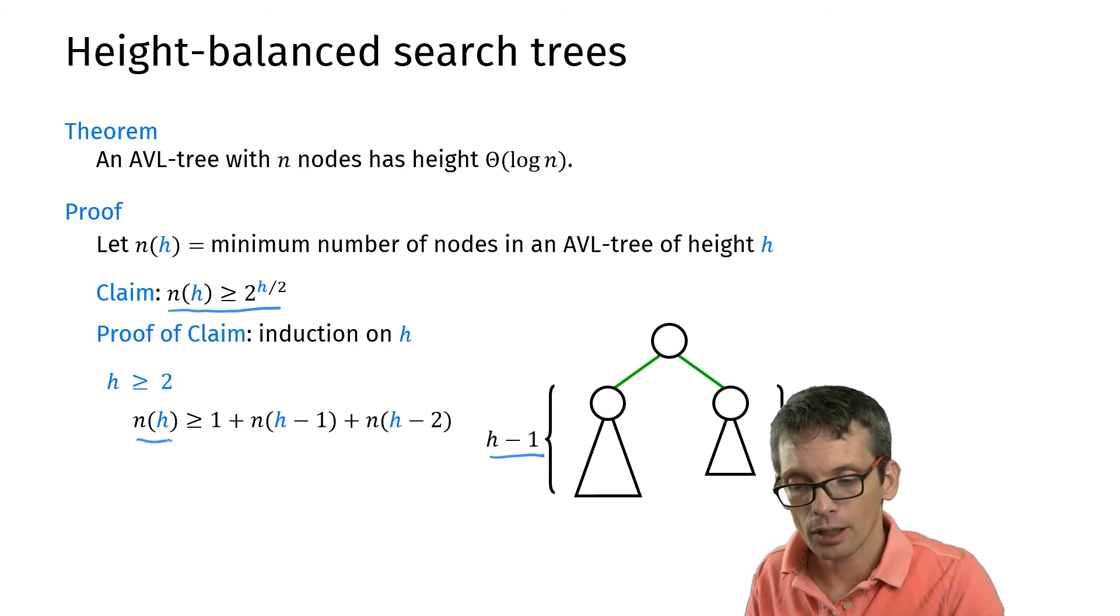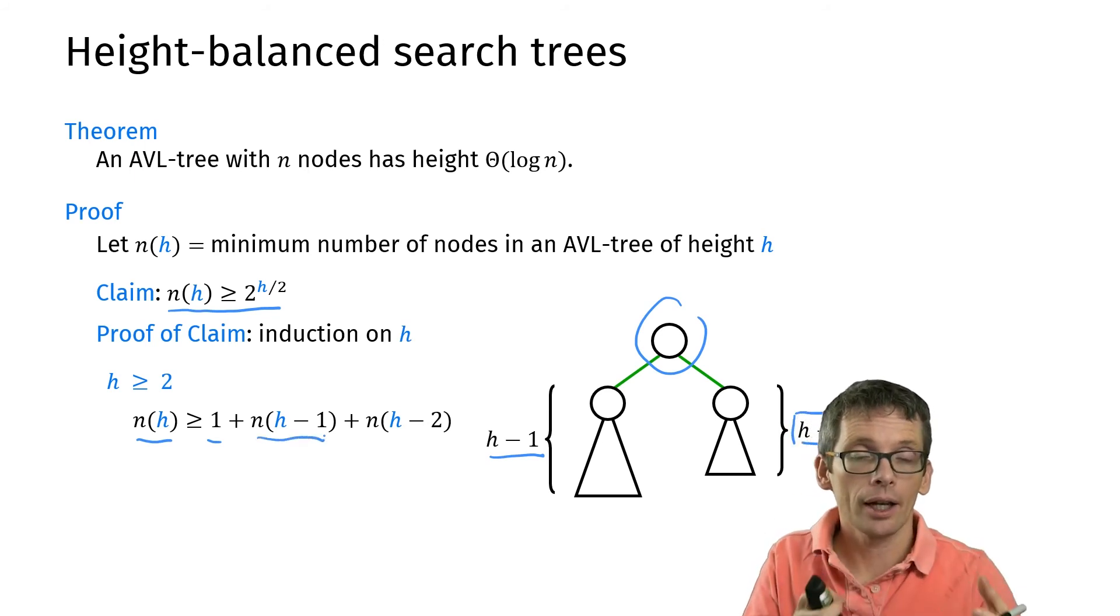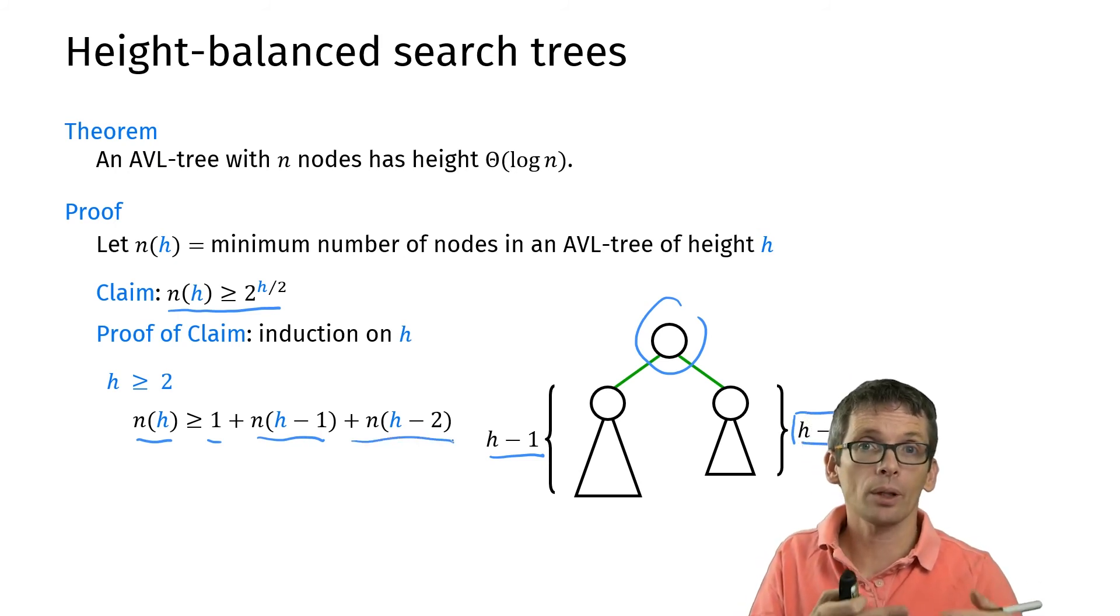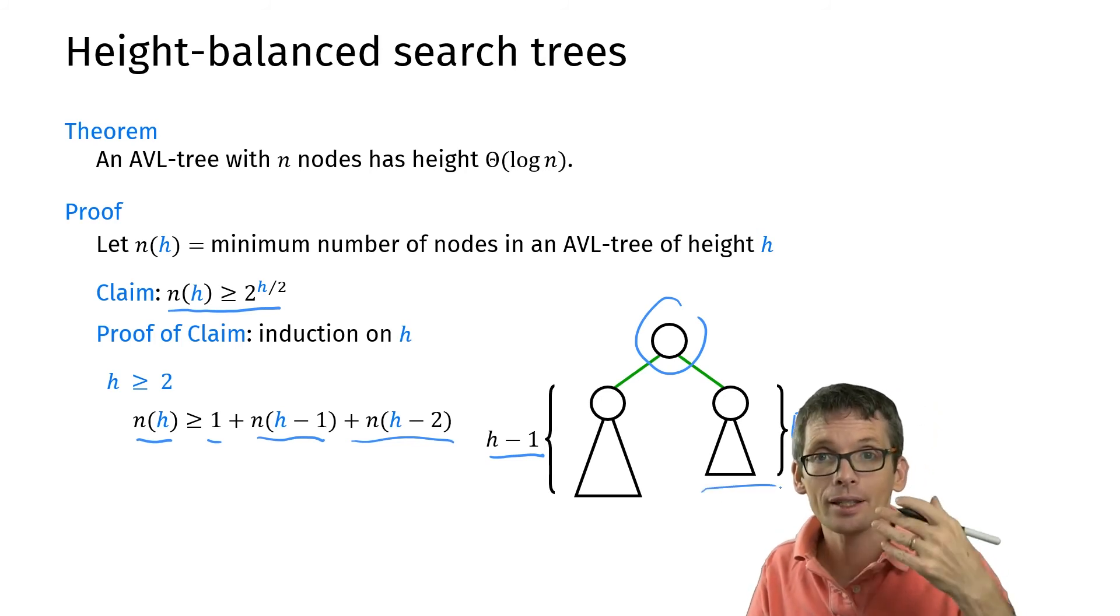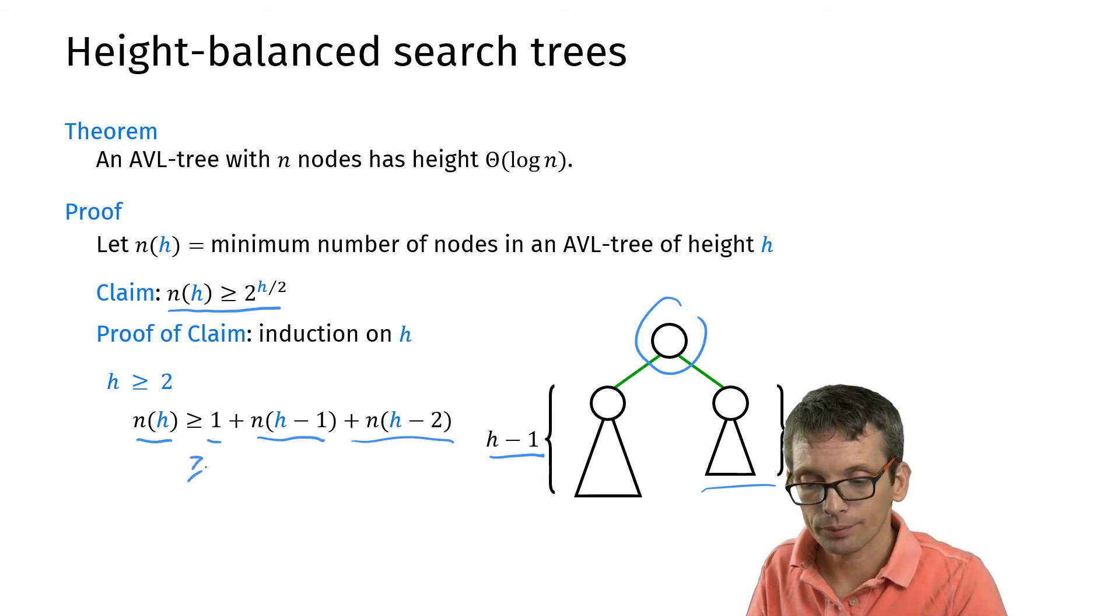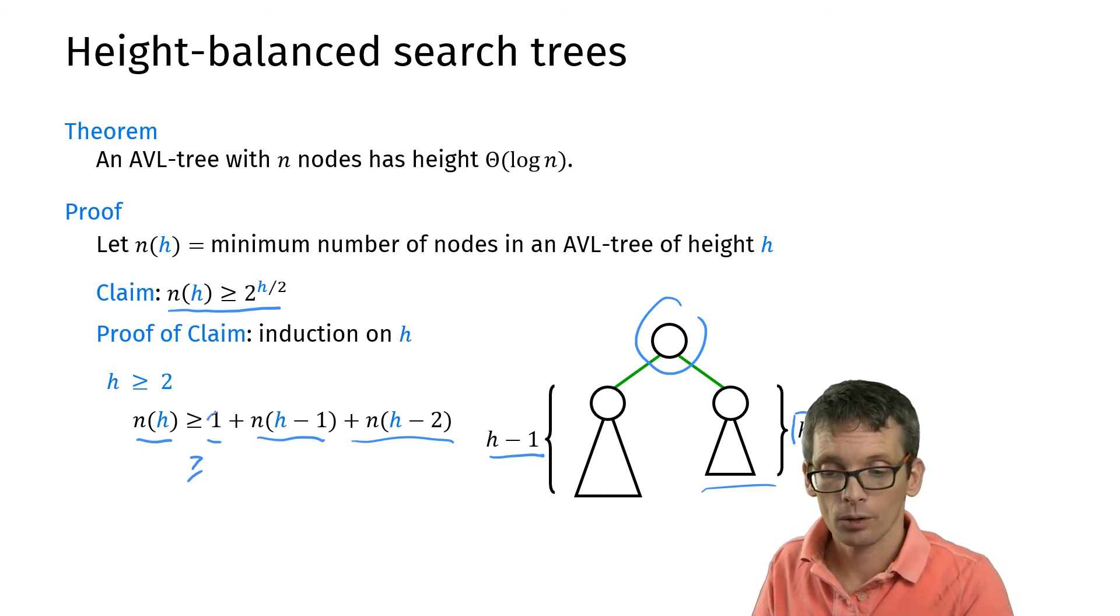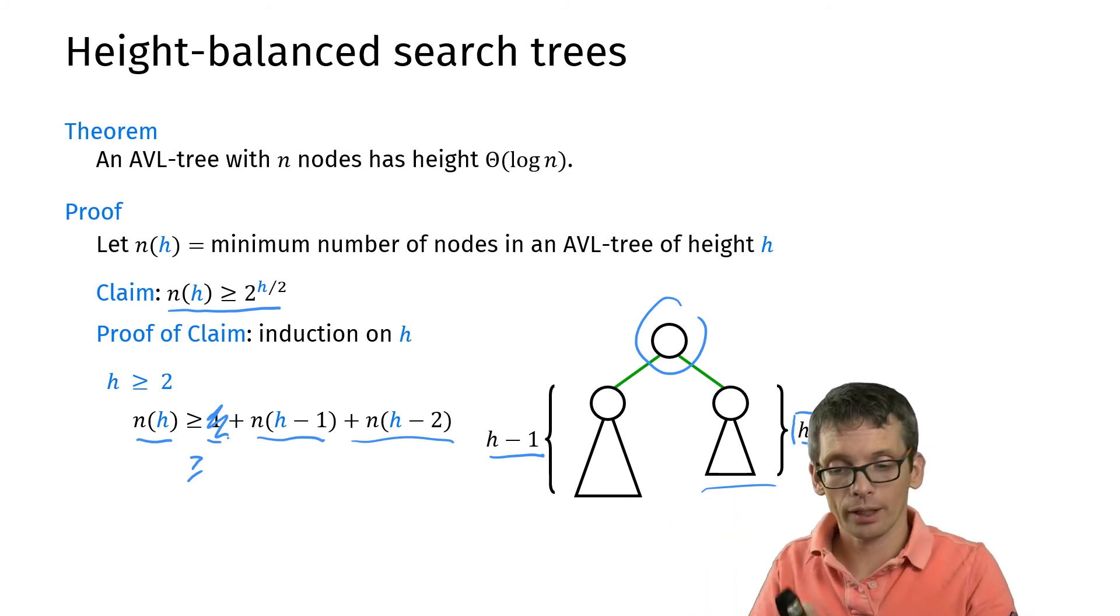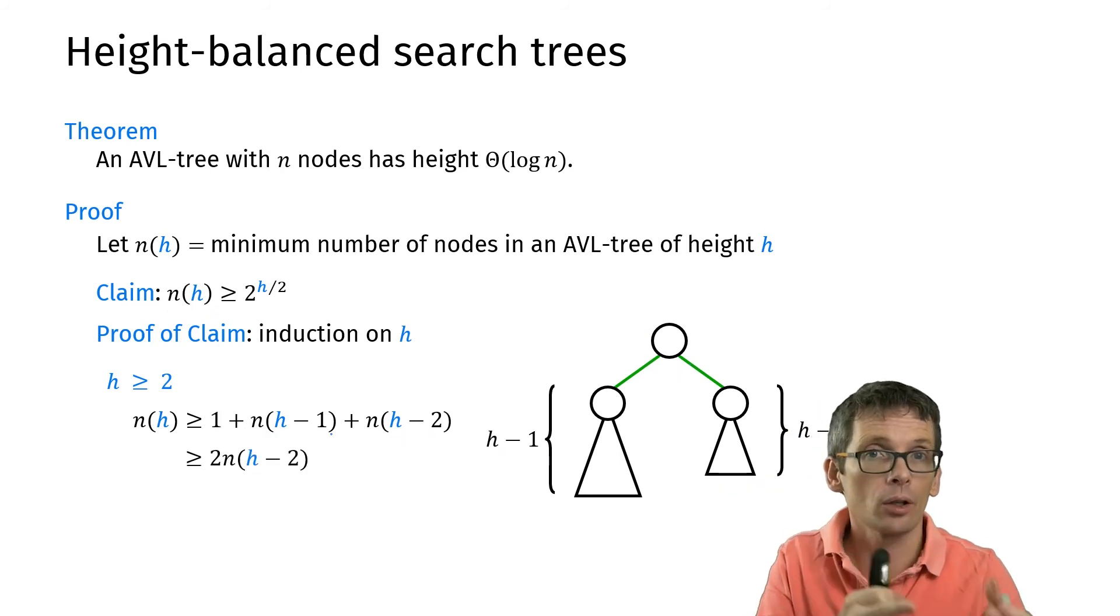So what does it give me? n(h) is at least 1 so that's the node up here plus n(h - 1) because one of the subtrees will have height h - 1 plus n(h - 2) because the other one will have height at least h - 2. So that's my right subtree in this case. Now I can simplify here. I want to have a lower bound for that, I can drop positive terms so I can ignore the one here. Also n(h - 1) is at least n(h - 2) so I can simply make this 2 times n(h - 2) in terms of a lower bound.